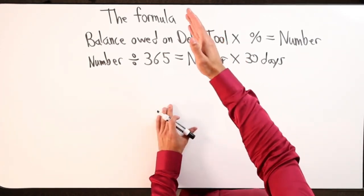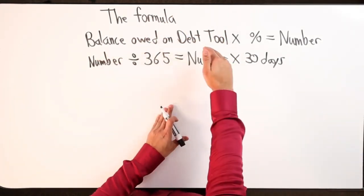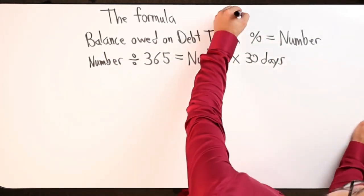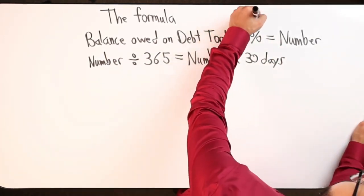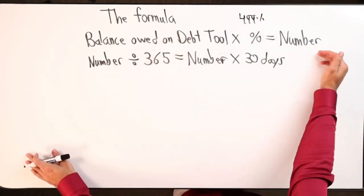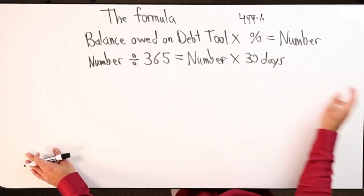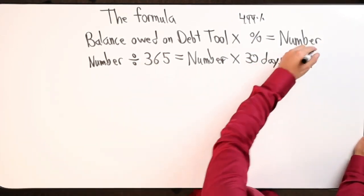You got the Amex. In her situation, take the American Express credit card balance times the interest rate 4.99%, get a number. Take that number, divide it by 365, get another number, times it by 30 days. And boom, you get N.